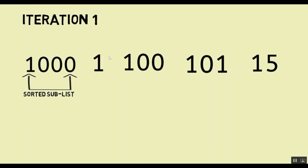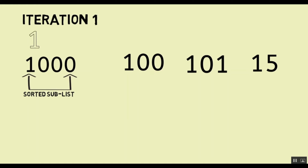Currently the element at the front of the unsorted sublist is 1. So we pick up 1 and then we insert it — and that is why the algorithm is called insertion sort. We insert 1 at its correct place in the sorted sublist. Currently our sorted sublist contains only one element, so 1 is picked up and moves to the sorted sublist.